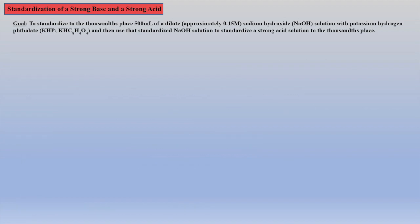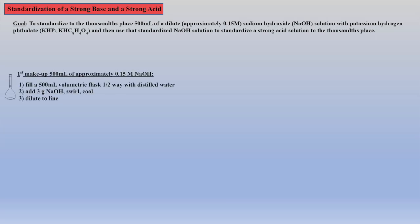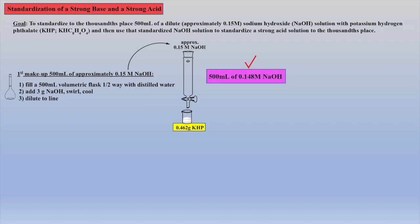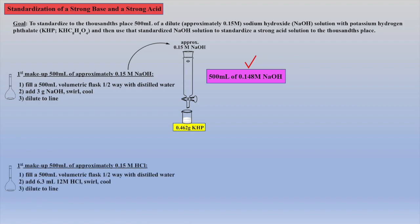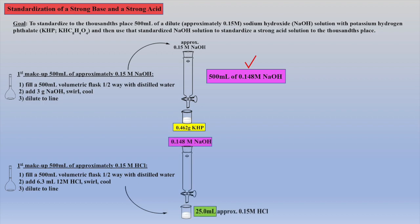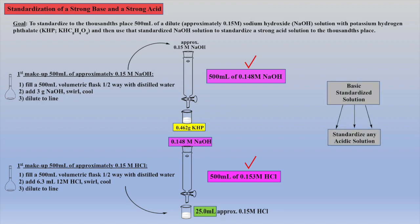Let's review what we have accomplished. We made 500 milliliters of an approximate 0.15 molar NaOH solution and standardized it against a known amount of KHP, which was experimentally found to be 0.148 molar sodium hydroxide. We then prepared an approximate 0.15 molar solution of acid, and an aliquot of this was standardized with the basic solution of known molarity — the acid solution was found to be 0.153 molar upon standardization. Once a basic solution is standardized, it can be used to standardize any acidic solution, and once an acidic solution is standardized, it can be used to standardize any other basic solution.